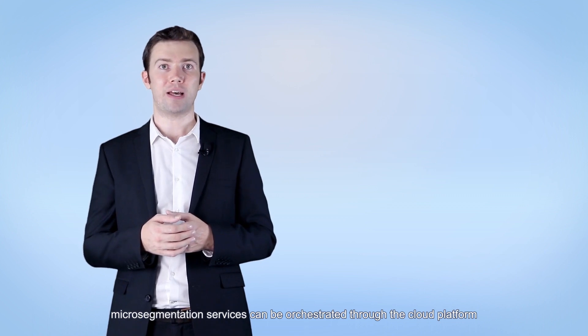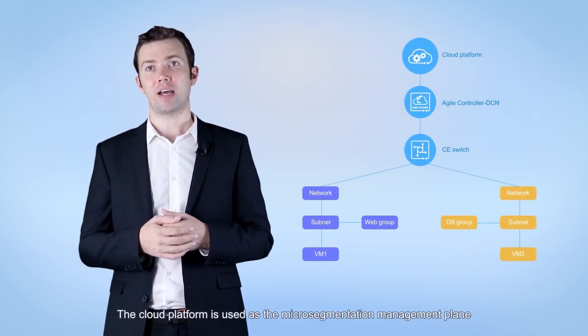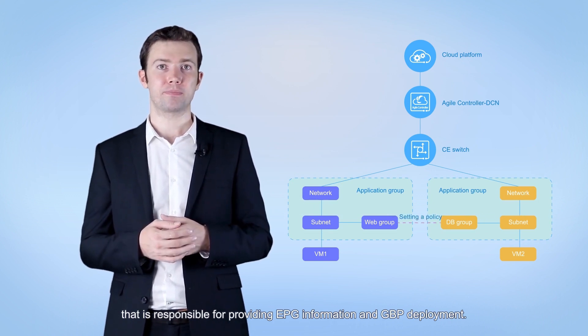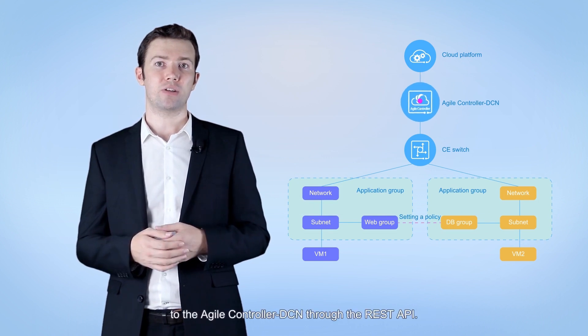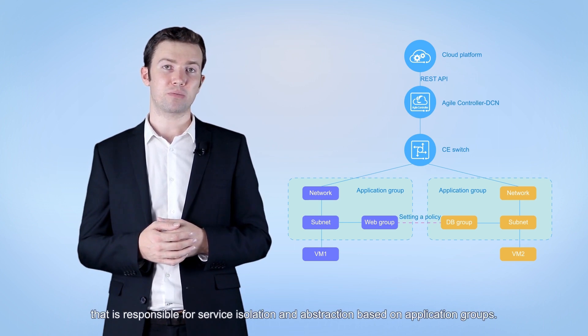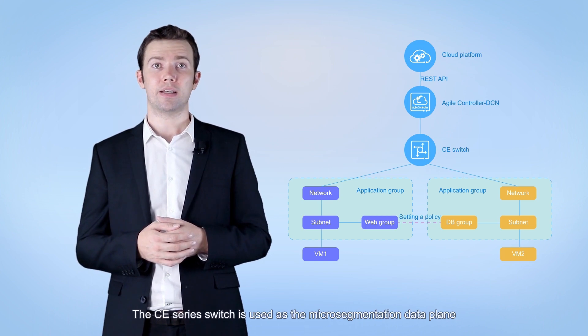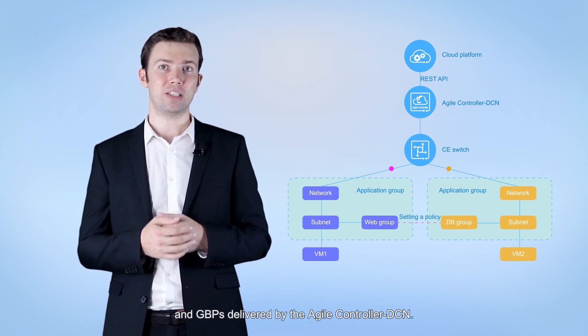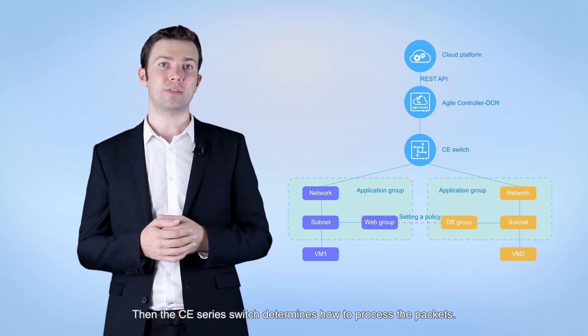After understanding the background and definition of micro-segmentation, let's look at its deployment. In the cloud data center, micro-segmentation services can be orchestrated through the cloud platform or the agile controller DCN. Cloud platform interconnection is used in the cloud network integration scenario. In this scenario, the cloud platform serves as the micro-segmentation management plane, providing EPG information and GBP deployment, and delivers configuration to the agile controller DCN via RESTful API. The agile controller DCN handles service isolation and abstraction, while the CE series switch acts as the data plane — matching packets with EPG information and GBPs to determine how to process them.